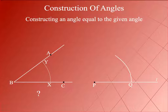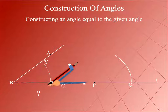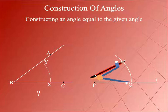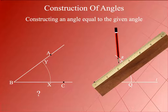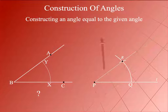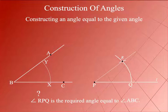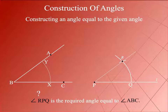With Q as centre and radius equal to XY, cut the previous arc at R as shown here. Join PR as shown here. Angle RPQ is the required angle equal to angle ABC.